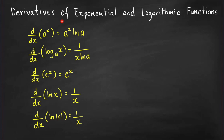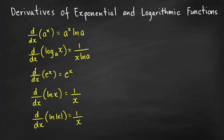Now let's discuss derivatives of exponential and logarithmic functions. Students often confuse the derivatives of a to the x and log base a of x because of the presence of ln a. To remember: write the two formulas next to each other. For log base a of x, the 'a' appears lower in the formula — so put ln a in the denominator. For a to the x, the 'a' appears higher — so ln a goes in the numerator.